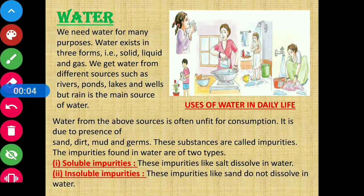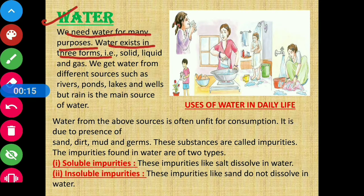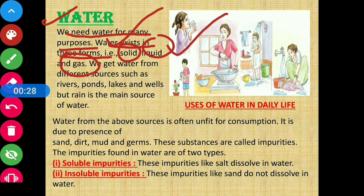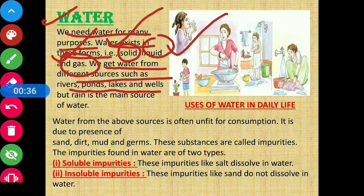In our last two videos we discussed about air. In this video we are going to discuss about water. We need water for many purposes. Water exists in three forms: solid, liquid, and gas. We get water from different sources such as rivers, ponds, lakes, and wells, but rain is the main source of water.